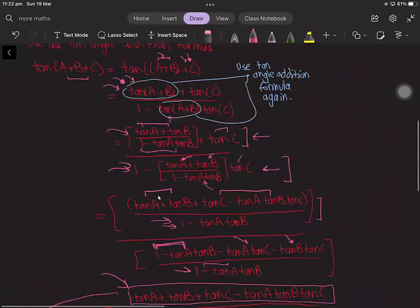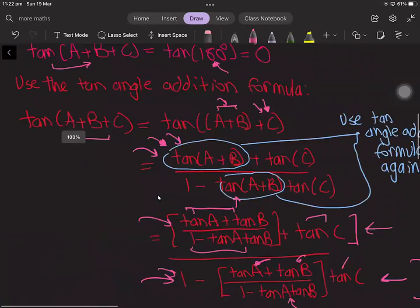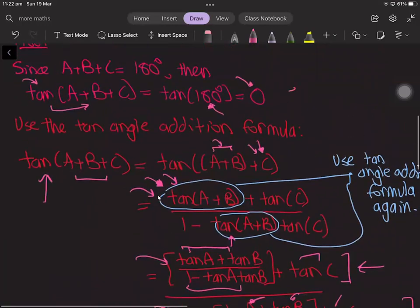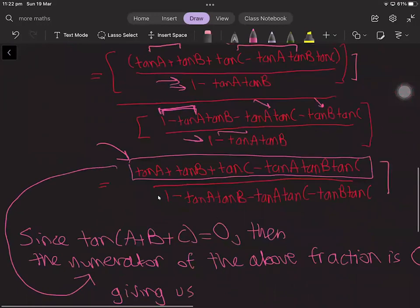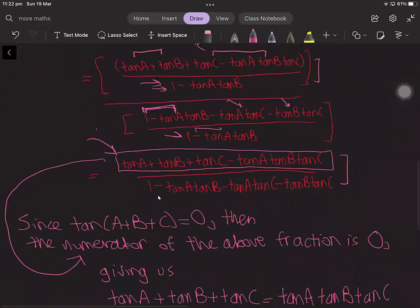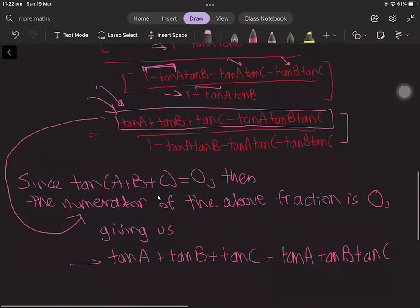And now since we know tan(A + B + C) is equal to zero, this means the numerator of this fraction has to be zero, and this finally gives us the original equation we wanted to prove: tan(A) + tan(B) + tan(C) = tan(A)tan(B)tan(C).